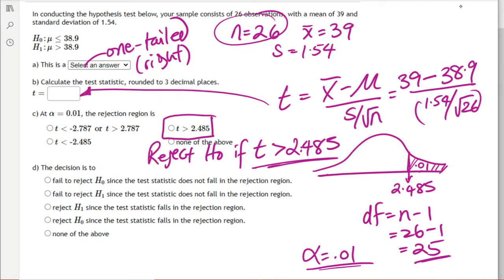But suppose our test statistic is 3.2, then 3.2 is greater than 2.485, so we will reject the null hypothesis because the test statistic falls in the rejection region.